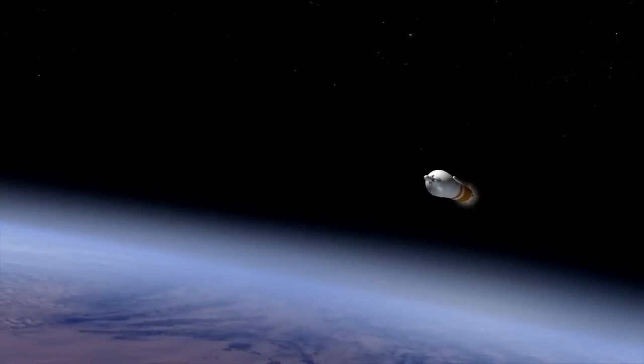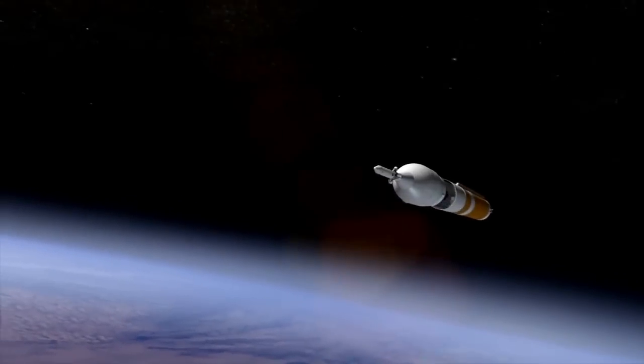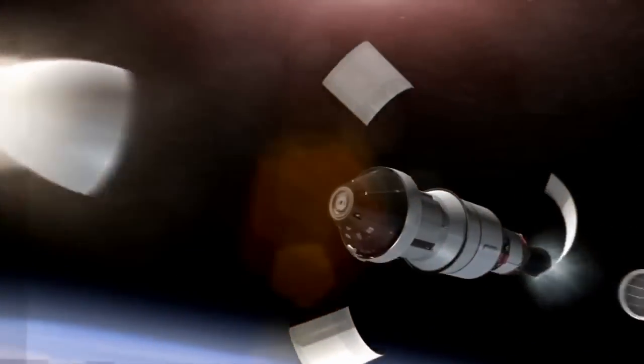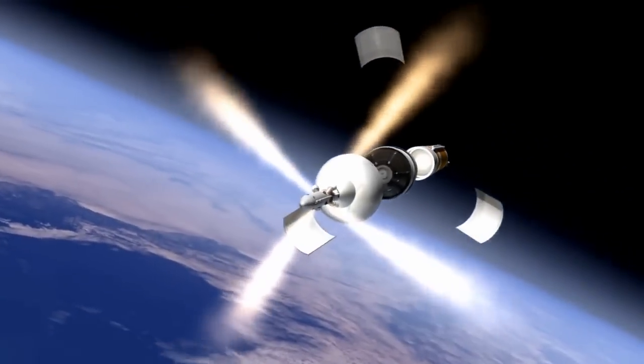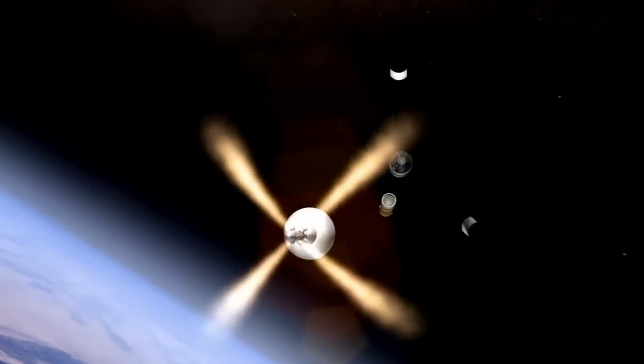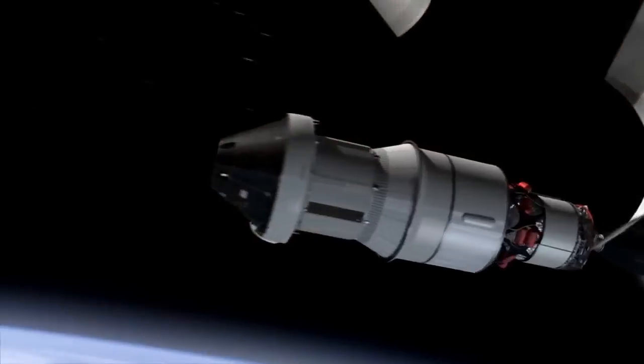As it punches into Earth orbit, Orion will jettison its launch abort system. The abort system is a safety feature designed to pull Orion and its crew out of danger if there were a problem with the rocket during ascent. Orion's journey is just beginning.